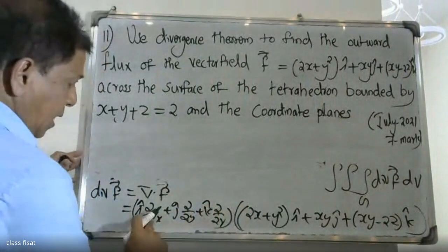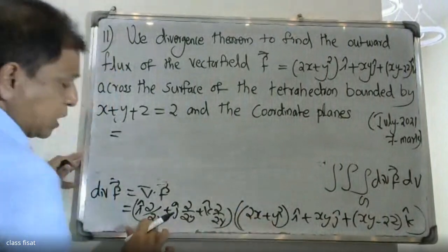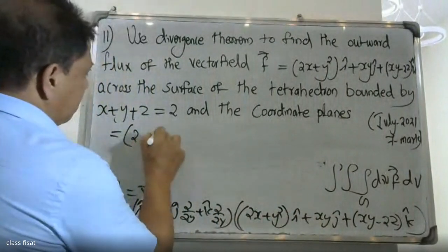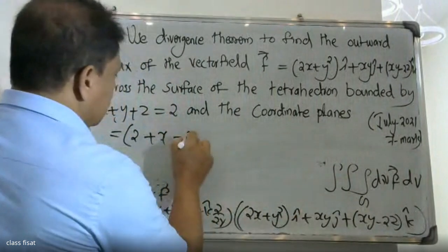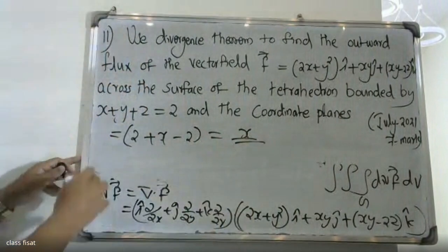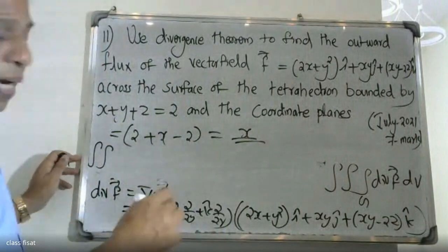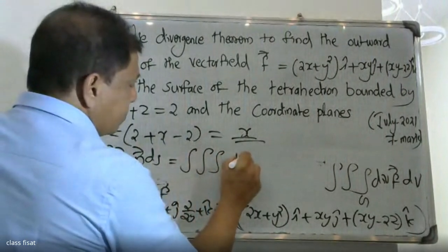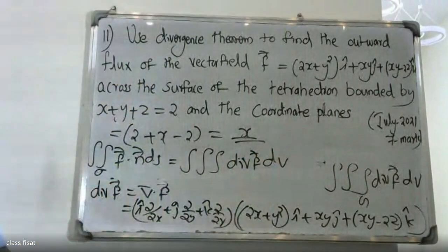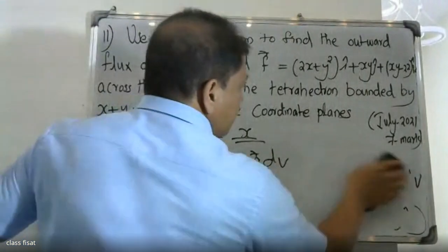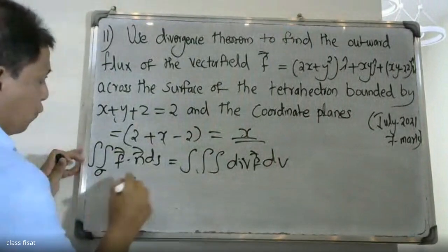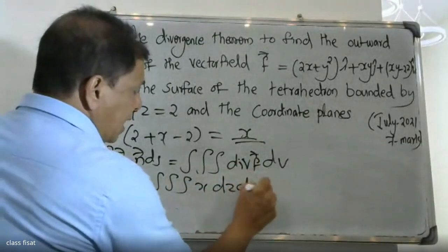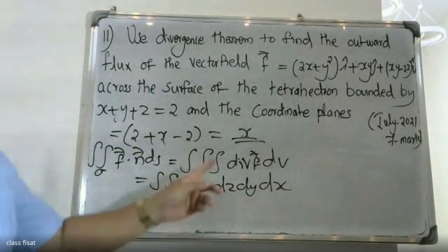Taking the partial derivatives: d/dx of (2x + y²) gives 2, d/dy of (xy) gives x, and d/dz of (xy - 2z) gives -2. Therefore div F equals 2 + x - 2, which simplifies. The double integral over Sigma of F dot n dS equals the triple integral of div F dV.